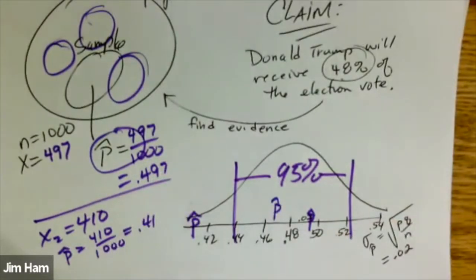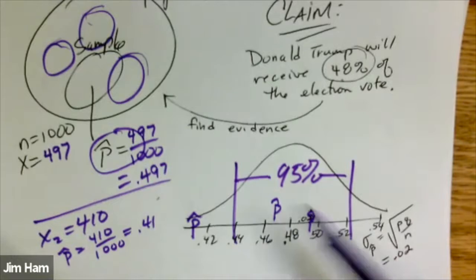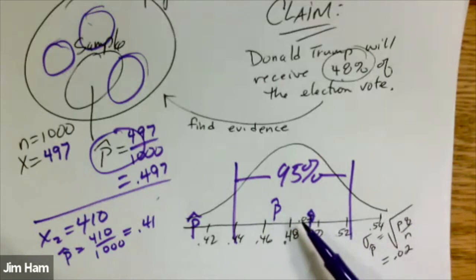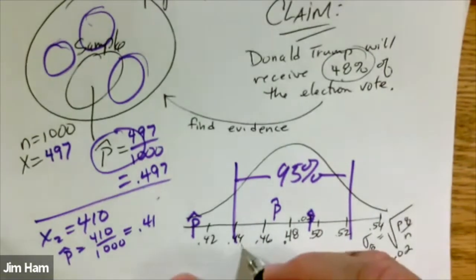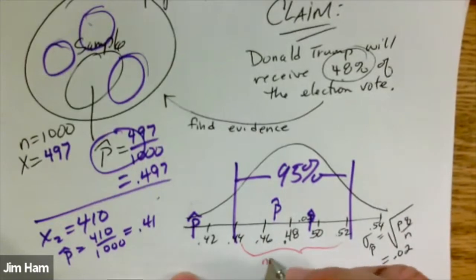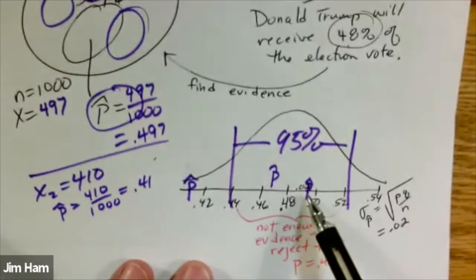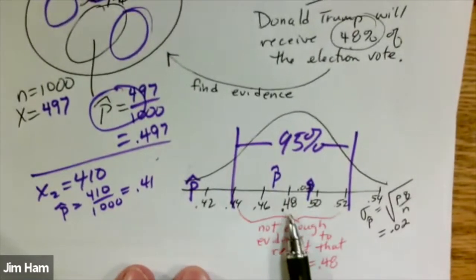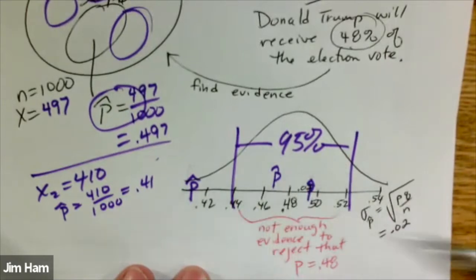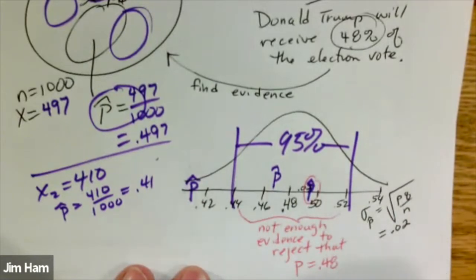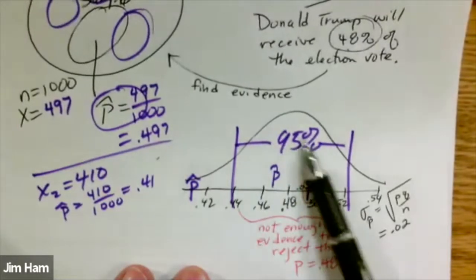Here's how we're going to make our decision. If we find a sample proportion like 0.497 that falls in the 95% range, we're going to say this is plausible if the population proportion is 0.48. Any sample proportion that we find in that range — not enough evidence to reject that the population proportion is equal to 0.48, because if 0.48 is true, we would get a sample proportion like this just by random sampling variation. Most of your sample proportions would be in here if this is true.